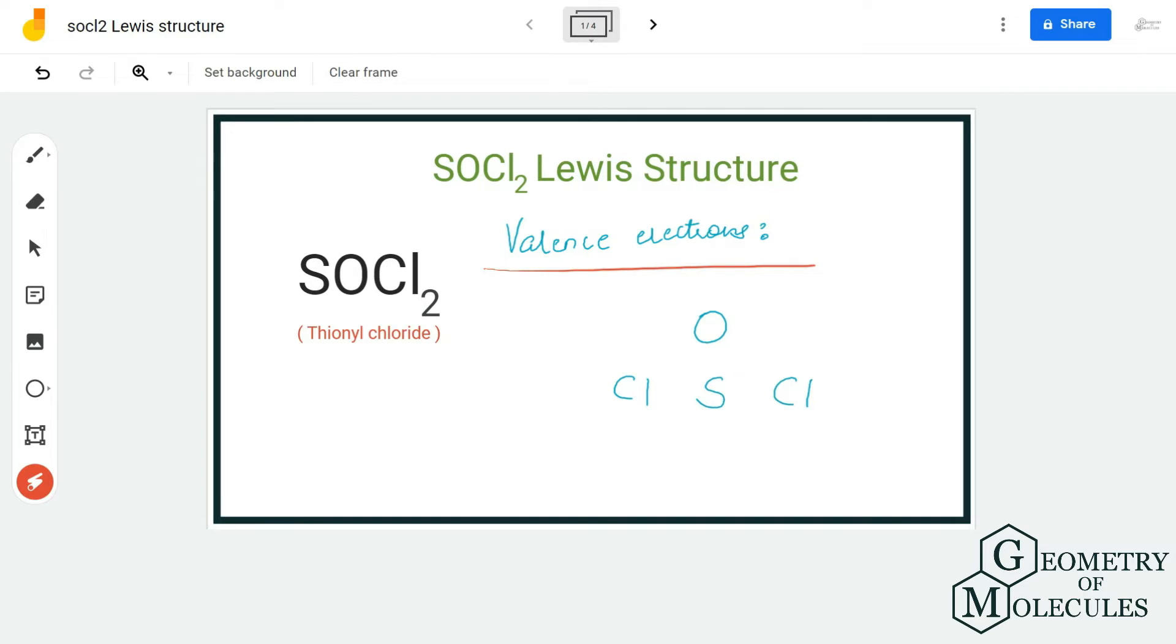To determine its structure, we are first going to look at the total number of valence electrons. Sulfur has 6 valence electrons, oxygen has 6 valence electrons, and chlorine has 7 valence electrons, but we are going to multiply this number by 2 because there are two atoms of chlorine. In total we have 26 valence electrons.